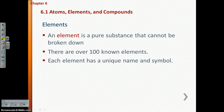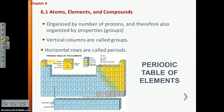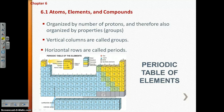Each element has a unique name and symbol, and that is what you see when you are looking at the periodic table of elements — the element's name, the symbol, the atomic weight, the atomic mass, the atomic number. A periodic table is organized in a very specific way. It is organized by the number of protons found in the atom of that element.